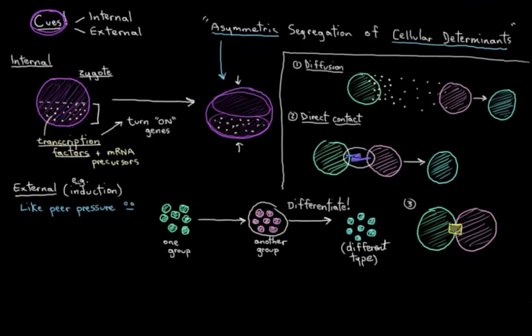Or you could have signals pass through gap junctions, which are little connections, or actually I should say, connexons between cells that are connected. And that could induce this cell to specialize, this cell over here. And I call this a connexon, because in cellular biology, these proteins that make up part of a gap junction are collectively called a connexon.